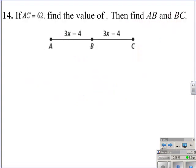And on to the last problem. If AC is equal to 62, find the value of x, and then we need to find the length of AB and segment BC. Since each of the segments AB and BC are represented with the same algebraic expression, B bisects, or is the midpoint of segment AC. Therefore, the measure of AB is going to be equal to the measure of BC.